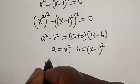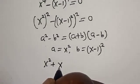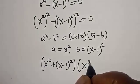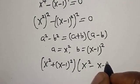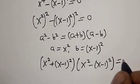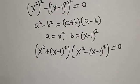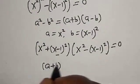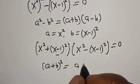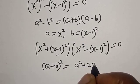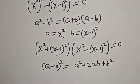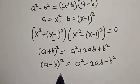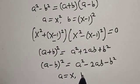Where a is equal to s-squared, b is equal to (s minus 1)-squared. Substituting: s-squared plus (x minus 1)-squared, multiplied by s-squared minus (x minus 1)-squared, is equal to 0. Remember the identity: (a plus b)-squared is equal to a-squared plus 2ab plus b-squared.